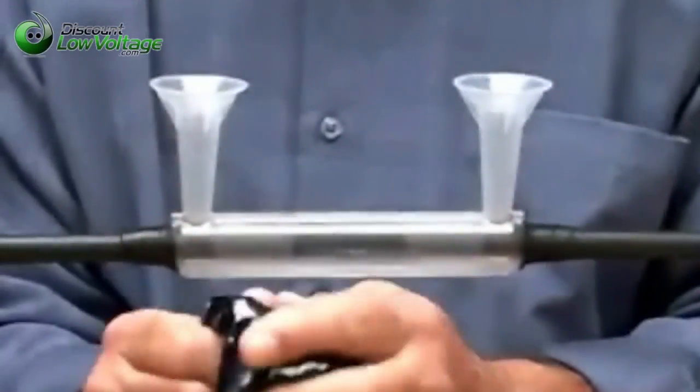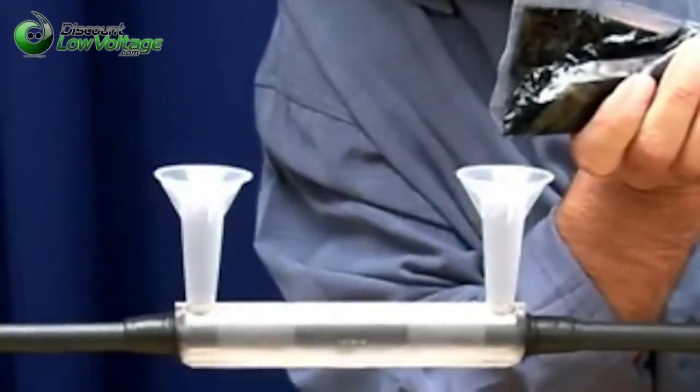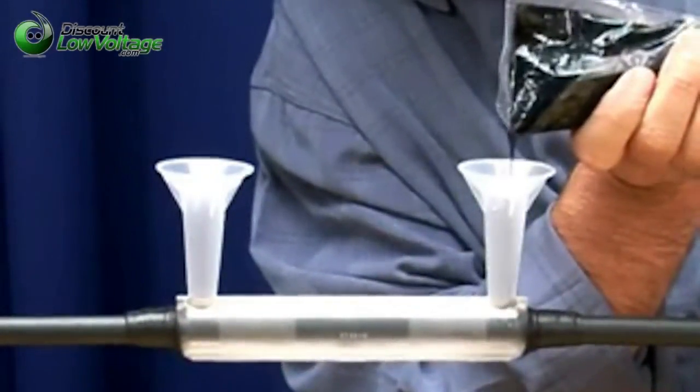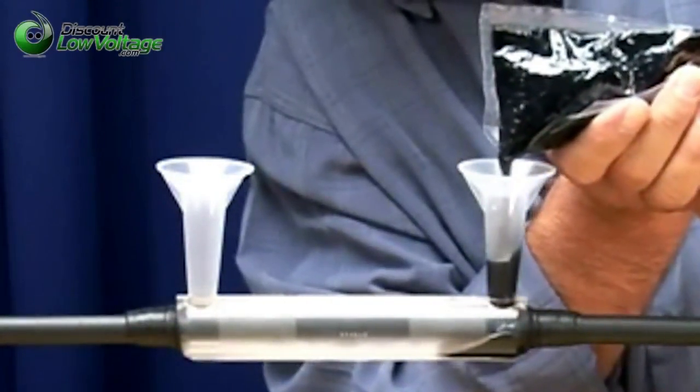Mix the resin thoroughly according to the instructions on the resin package. Pour the resin immediately after mixing. Fill only through one spout until both spouts are completely filled.